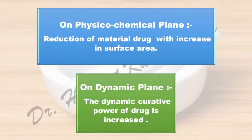On the physicochemical plane, trituration results in reduction of material drug with increase in surface area. On the dynamic plane, the dynamic purity power of the drug is increased.